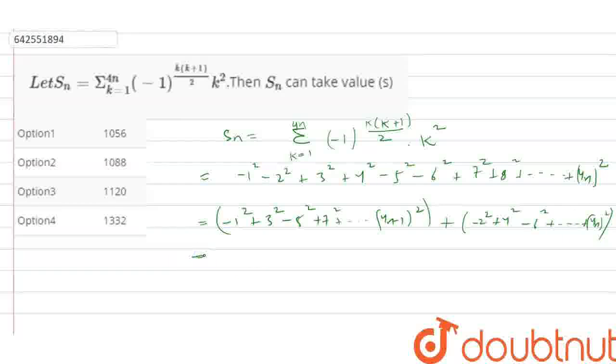Now, if we multiply and divide by 2, we will get 2 times 4 plus 12 plus 20 and so on till 8n minus 4, plus 2 times 6 plus 14 plus 22 till 8n minus 2.